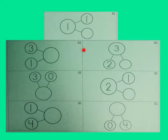What is the missing number in these number bonds? 0, 4, 1, 3, 1, 5, 4.